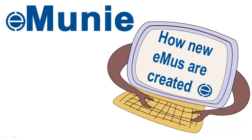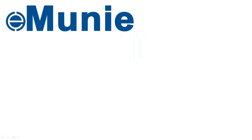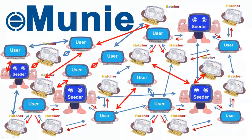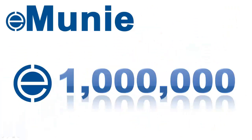In this intro video we're going to look at how new emus are created. When eMoney is launched, this will create a whole network of users, hatchers, seeders, etc. The schematic shows part of that network. Also at the launch, there will be a certain amount of emus available for use. For the purposes of this video, let's suppose that is 1 million emus.